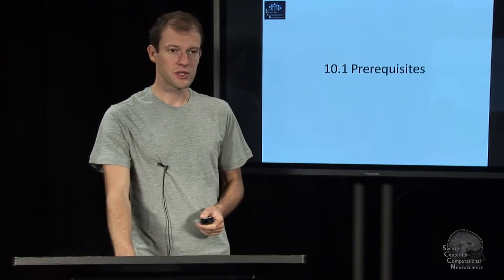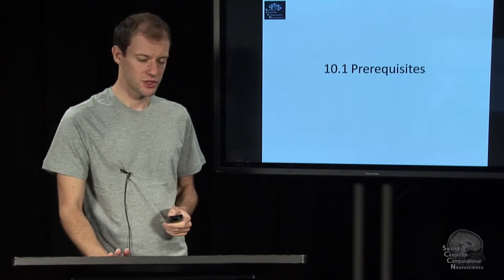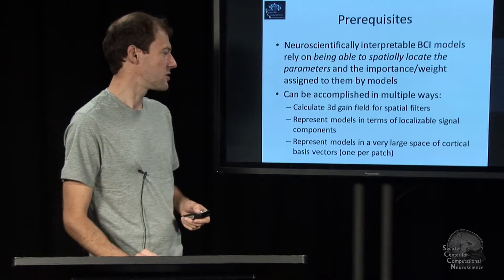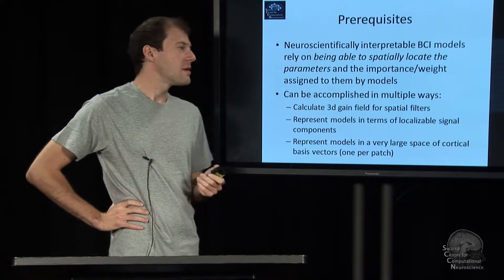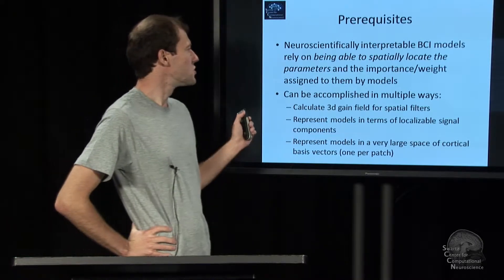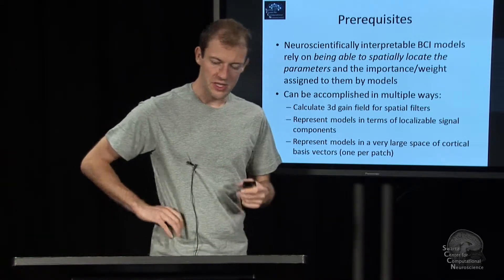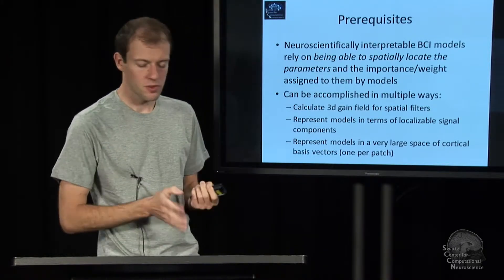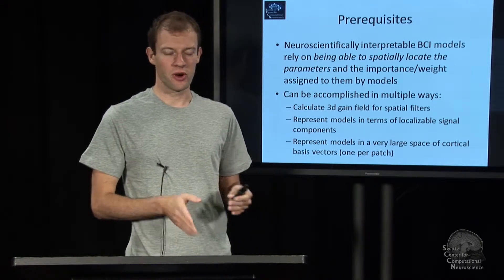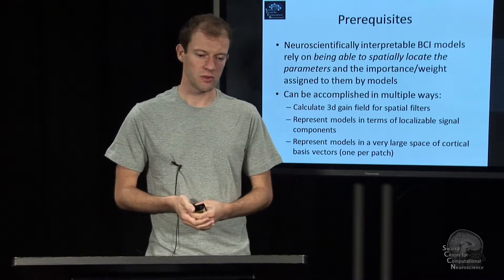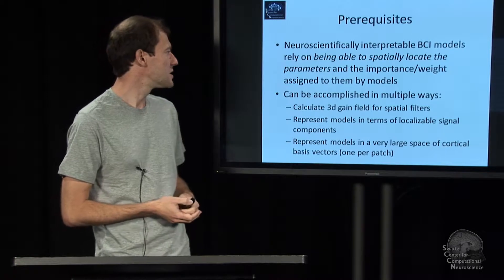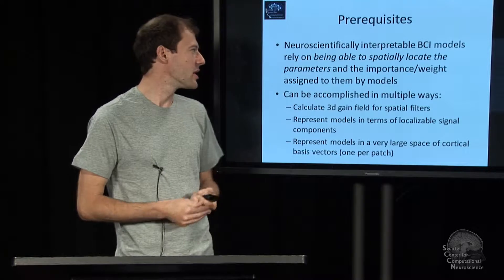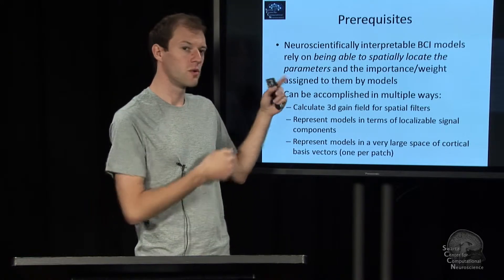The first module of this lecture covers prerequisites on neuroscience-based brain-computer interfaces. Fundamentally, to interpret BCI models and their parameters, you can interpret things like time ranges where things become relevant, but where the most information is in the location of certain parameters in the brain, so you need to be able to actually locate these parameters.